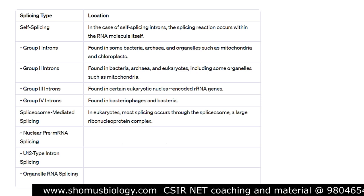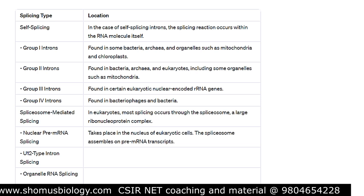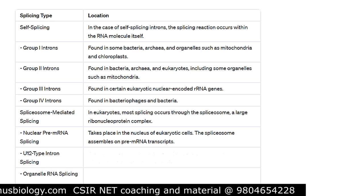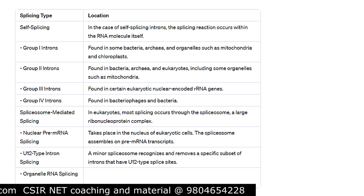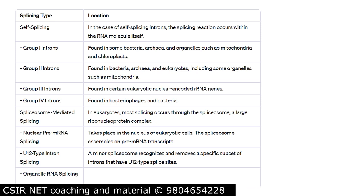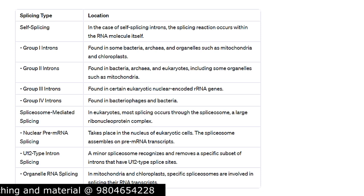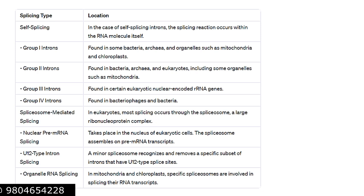In eukaryotes, most splicing occurs through the spliceosome, which is a large ribonucleoprotein complex. SNRNPs and snRNAs are involved in this process. Nuclear pre-mRNA splicing takes place in the nucleus of eukaryotes, where the spliceosome assembles on pre-mRNA transcripts. U12-type splicing involves a minor spliceosome that recognizes a specific subset of introns with U12-type splice sites. In mitochondria and chloroplasts, organelle-specific spliceosomes handle RNA transcript splicing.